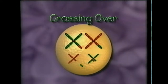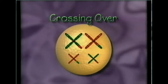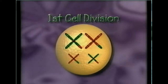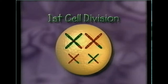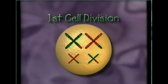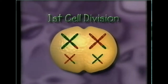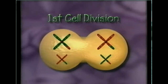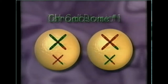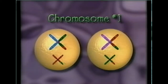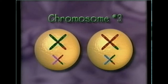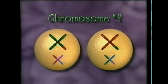Next, the cell divides, with the chromosome pairs separating equally and segregating independently to produce two cells. Now each of the two cells has half the number of chromosomes as the original cell, but each chromosome has already doubled.